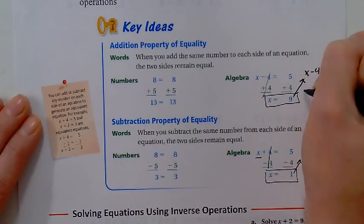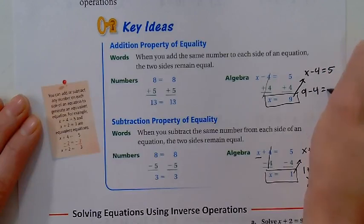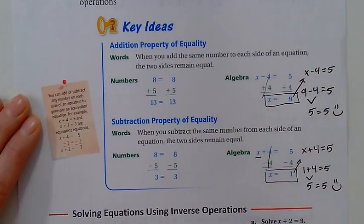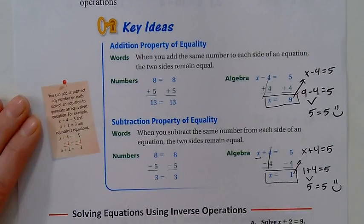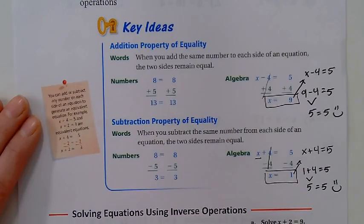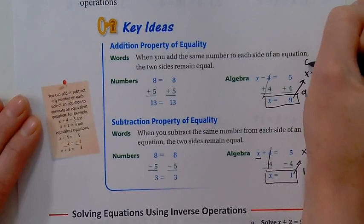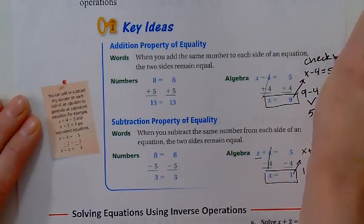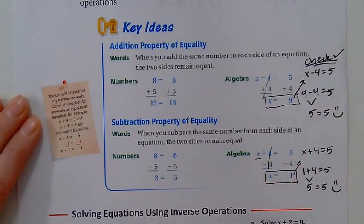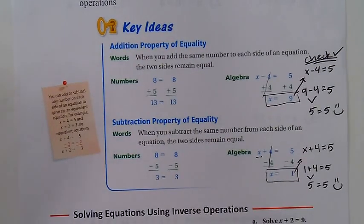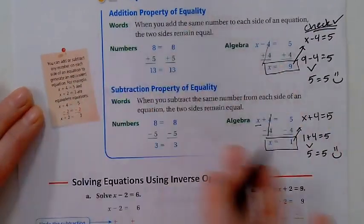Same up here: x minus 4 equals 5. All right, let's plug in our 9 we found earlier. 9 minus 4 equals 5—9, 8, 7, 6, 5. It works. Always good to check. Once you solve for a variable, please check that it works. Do the check. Take the time to do the check. That took me what, 15 seconds? You can do 15 seconds.